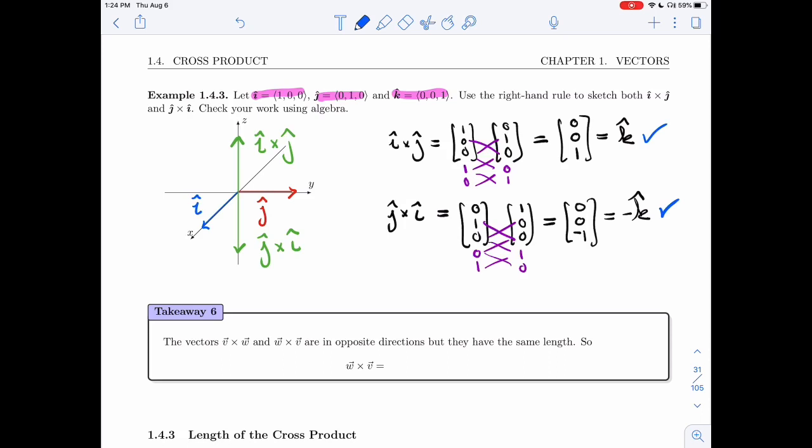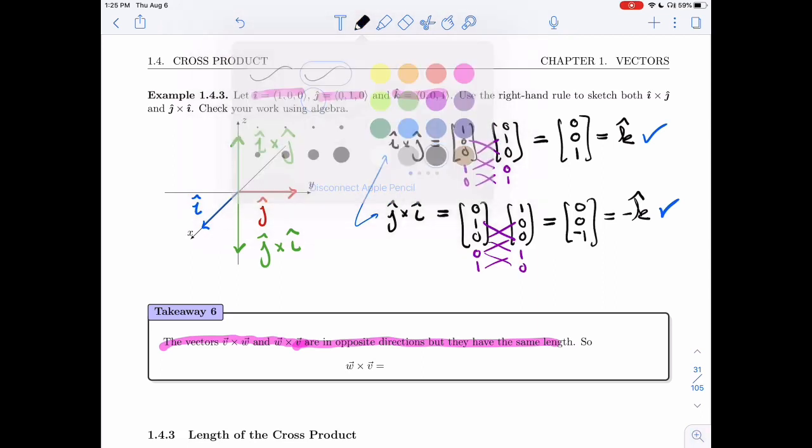So one thing to notice from this is if I look at these two vectors, if I've just switched the order of the vectors, i cross j versus j cross i. So the vectors v cross w and w cross v, well that's what I did here, are in opposite direction but they have the same length. Alright, so what does that mean? It means that w cross v is minus v cross w. This is very interesting. This is one of the first cases where a product is not commutative. You can't just switch the order of the two terms in your product. If you do switch them, you need to add a minus sign.